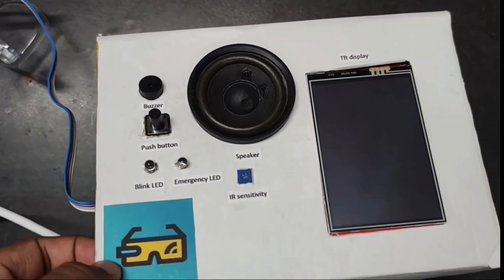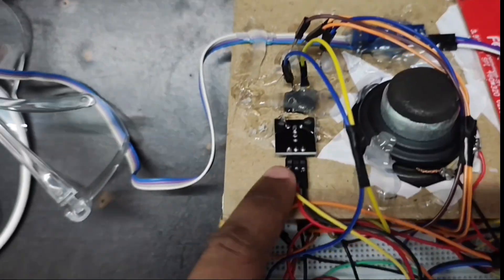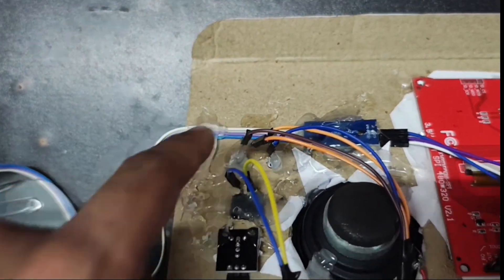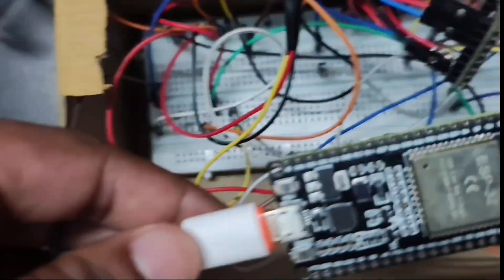Let's see what's inside this. Speaker, IR sensor module with a potentiometer, a buzzer, push button, and LEDs. MP3 module, and this is the ESP32. And these are the two resistors.